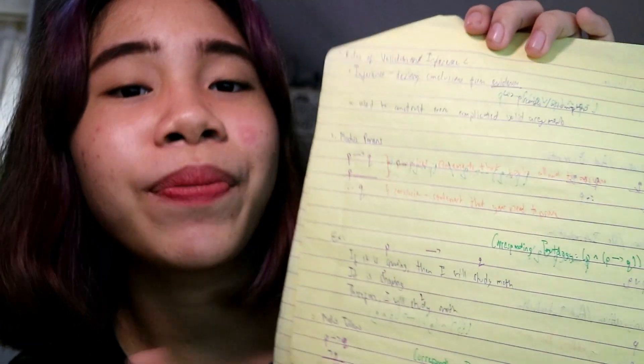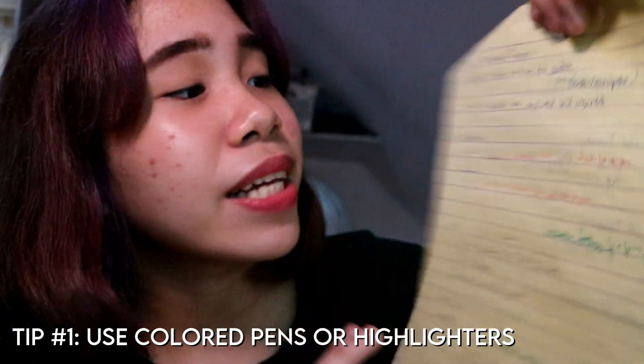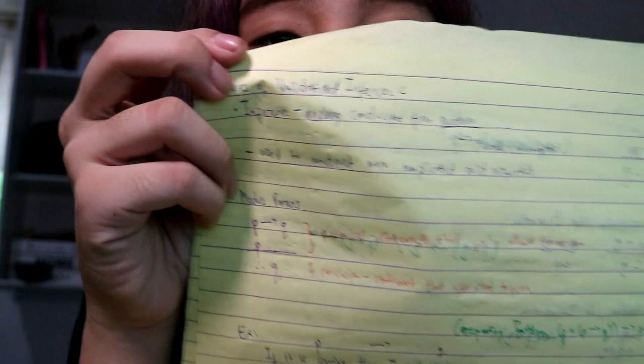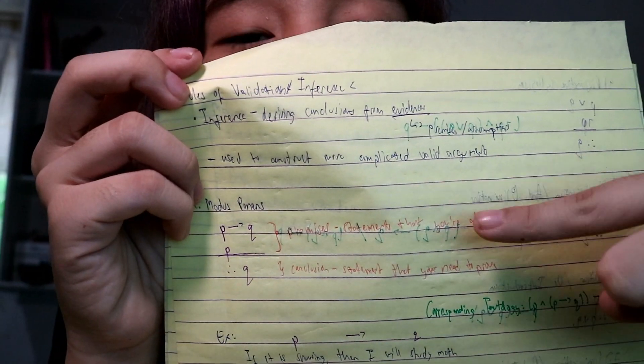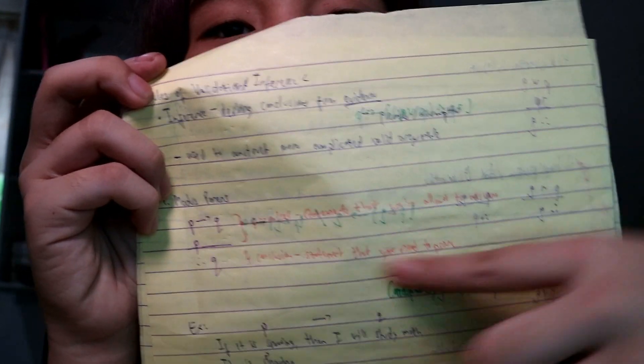Gusto ko lang ma-share: nung may assignment ako ng discrete structure, sinulod ko na lahat ng possible outcomes para tinignan ko na lang at ma-practice ko siya. Sa module 3 naman, nandito yung formal proof of validity — paano mo malalaman agad kung valid or invalid yung sentence or statement. Yung mga modus ponens, argument forms, kung valid ba siya or invalid. And as you can see, kahit pangit ng aking handwriting, my first tip is to use different colored pens para ma-highlight. Red ball pen for notes or asterisks, green for formulas, blue and violet for definitions.